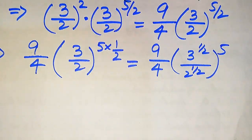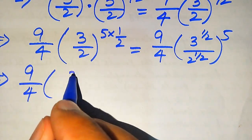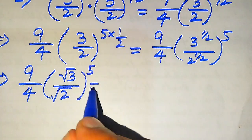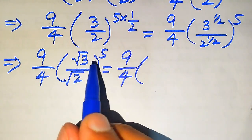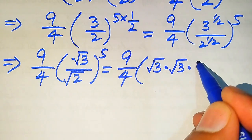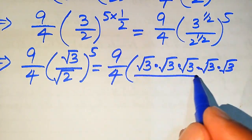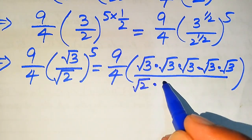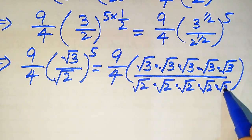This gives us 9 over 4 times (3 to the power of 1 over 2 divided by 2 to the power of 1 over 2) to the power of 5. Since 3 to the power of 1 over 2 is square root of 3, and 2 to the power of 1 over 2 is square root of 2, we expand this as square root of 3 multiplied five times divided by square root of 2 multiplied five times.